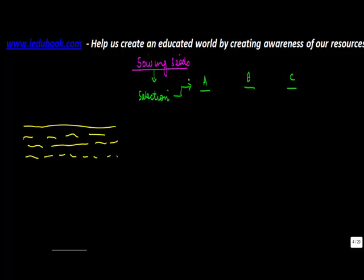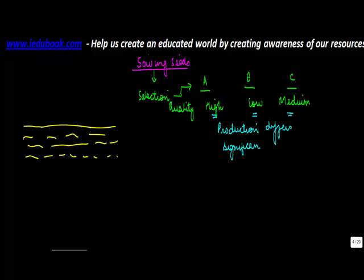Now depending on the quality, let's say the quality of A is high, B is low, and C is medium. Now depending on this quality of the seed, the production can differ very significantly. Production differs significantly depending on what quality of seed you are using.